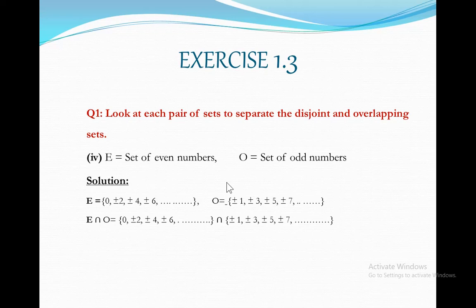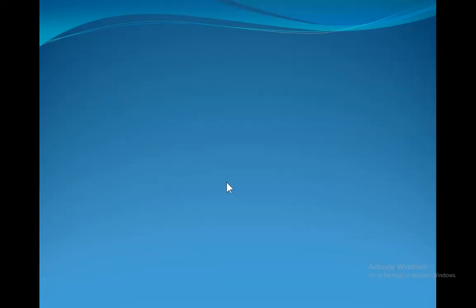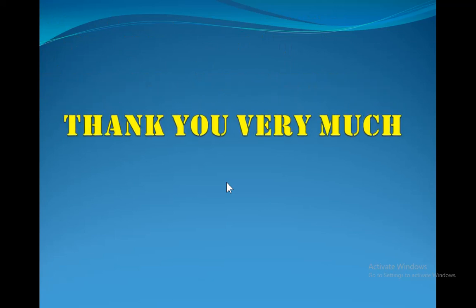Let us consider their intersection E intersection O. Well clear, a number which is even is not odd. So here in this case E intersection O is equal to empty set. That completes the definition of disjoint sets. So these are disjoint sets. Hope you all understand. Thank you very much, have a very nice time. Bye.